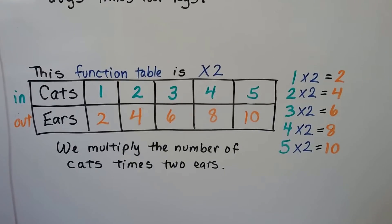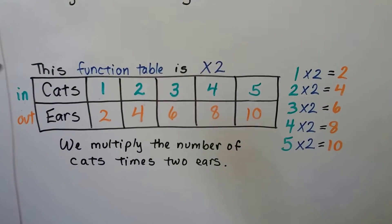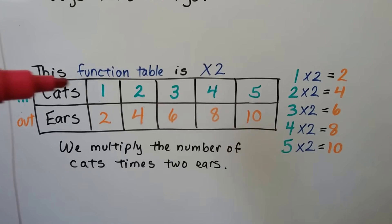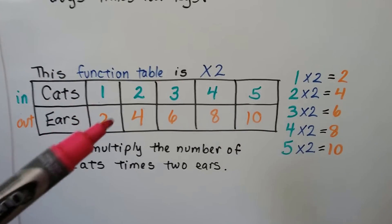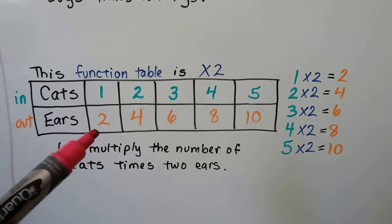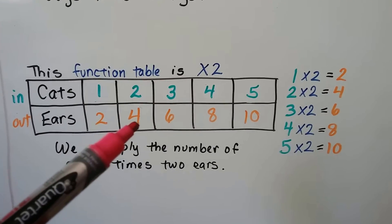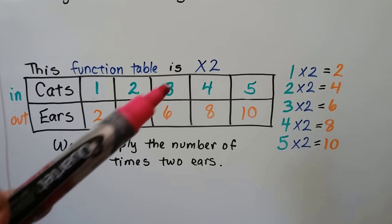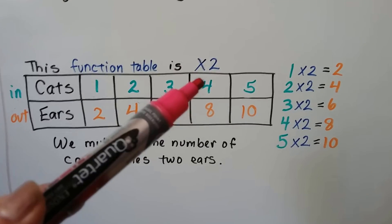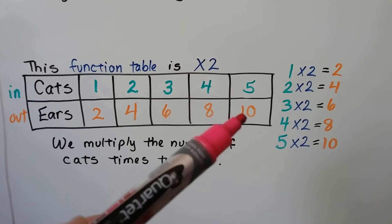This is a function table of times 2. Cats have 2 ears, so if we put in 1 cat, we're going to multiply the 1 times 2 and have 2 ears. If we put in 2 cats, 2 times 2 is 4 ears. If we put in 3 cats, 3 times 2 is 6 ears. 4 would be 8 ears and 5 would be 10 ears.